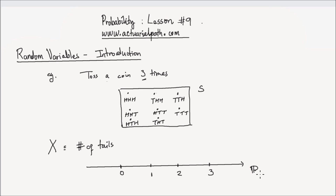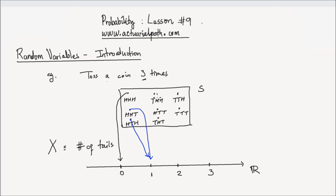That's a real line. And you can map, for example, heads, heads, and heads to the point zero on this real number line. Likewise, you could map heads, heads, and tails — you have one tail at that sample point — so you can map that to the point one. Heads, tails, heads can be mapped again to the point one. Tails, heads, heads again can be mapped to the point one.